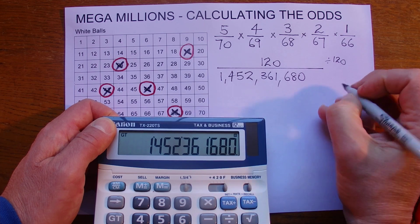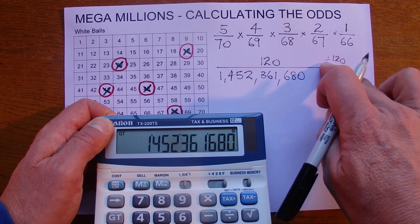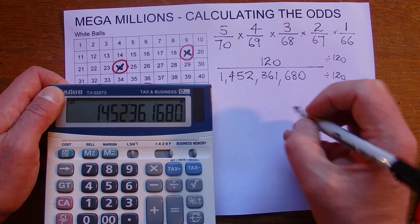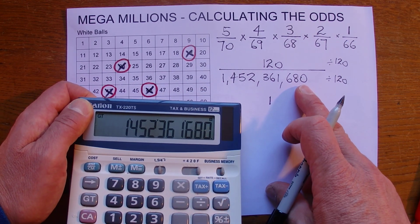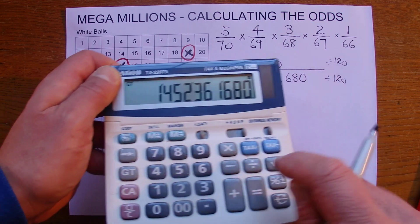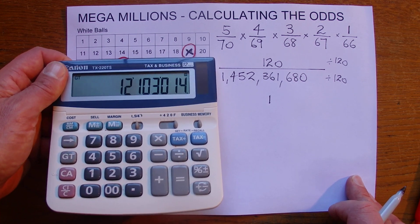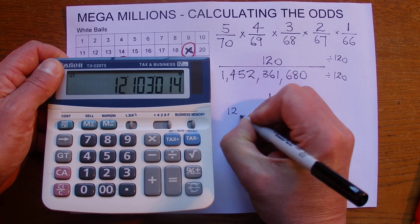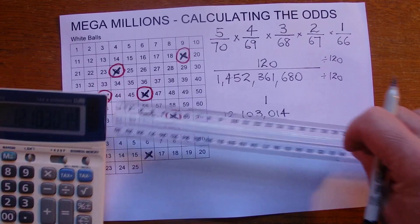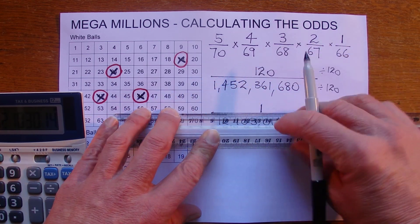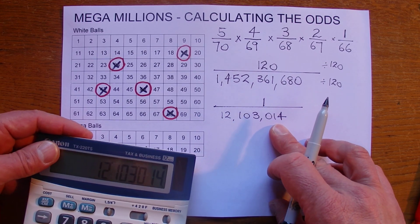then we can simplify that fraction by whatever we do to the top, we'll do to the bottom. So if we divide 120 by 120, that will just give us one, one chance. And if we divide the 1.4 billion by 120, I'll do that on the calculator now, we'll get a figure of one chance then in just over 12 million. 12,103,014. So that's the odds then of getting all five numbers right in the top section. Five out of 70, one chance in 12 million.